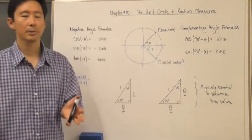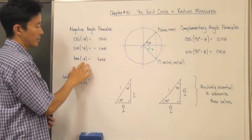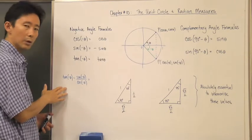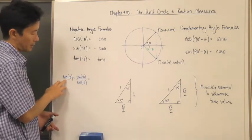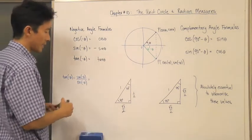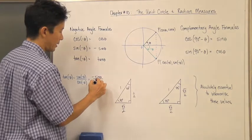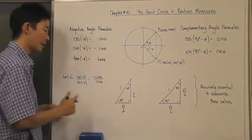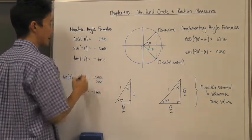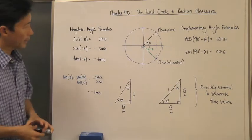Everything is based upon sine and cosine, so even for tangent, we go back to what we know. The tangent of negative theta is the same as sine of negative theta over cosine of negative theta. In terms of theta, this becomes negative sine of theta divided by cosine of theta, which is just negative tangent of theta. So those are the correct negative angle formulas.